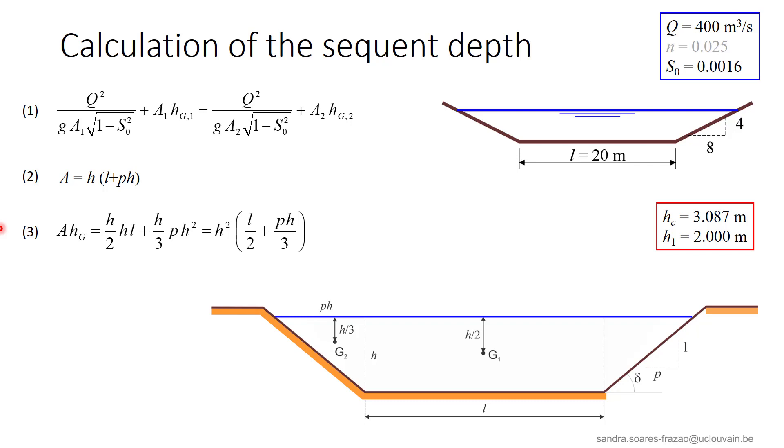For the static moment, we decompose the trapezoidal cross section into two triangles and one rectangle, like here, one triangle, the second one, and a rectangle, which results in equation 3.